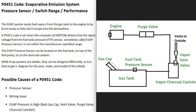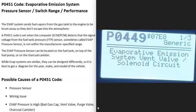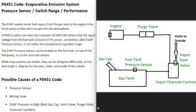Usually if a gas cap issue causes a problem, you're going to get another code. For example, if you also have code P0449 — evaporative emission system vent valve solenoid circuit — there might be something wrong with the vent valve: it's not opening right, or it's stuck shut, and it's causing the pressure to be high inside the whole evap system, which triggers the pressure sensor. If you are getting other codes, be sure to pay attention to them, as some component inside the evap system may be causing the pressure to be too high.